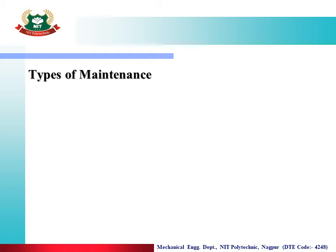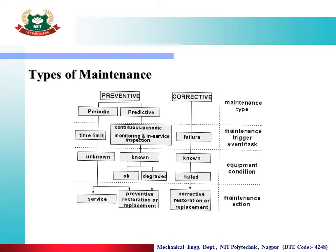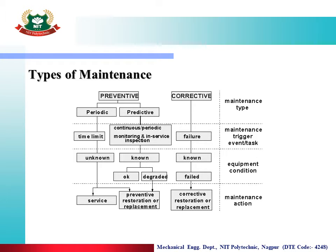So let us discuss about maintenance. What is prevention? Prevention means avoiding the causes before they occur — prevention is better than cure. In preventive action, there are two types: periodic and predictive.